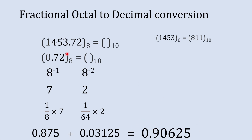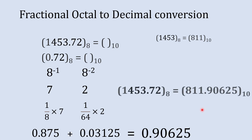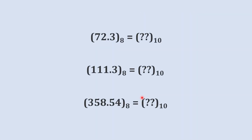Adding both numbers together: 0.875 plus 0.03125 gives 0.90625. So 0.90625 is the decimal equivalent to octal 0.72. Finally, we add both parts together to get the complete fractional decimal equivalent to the fractional octal number. Now solve the practice example and write your answer in the comments to check if your answer is right or wrong.